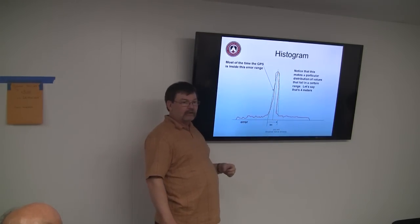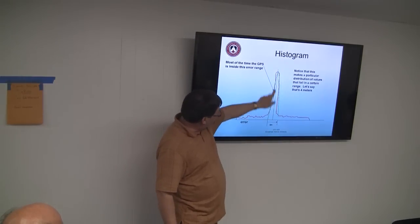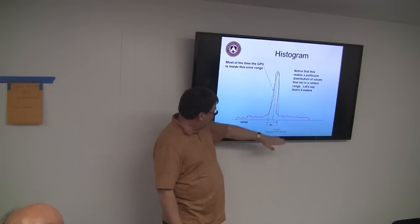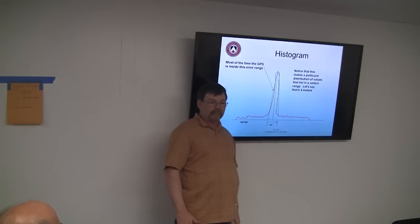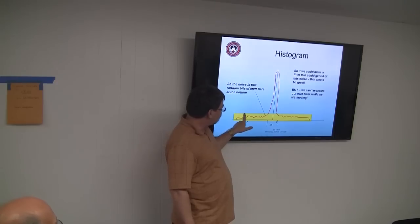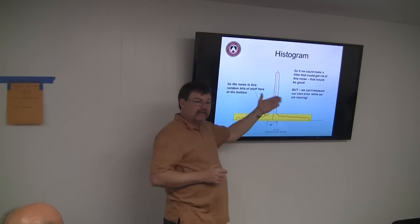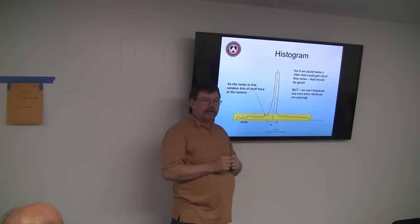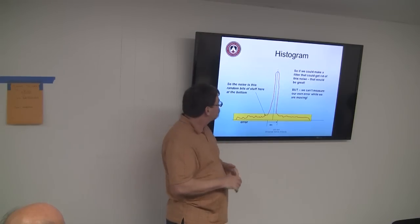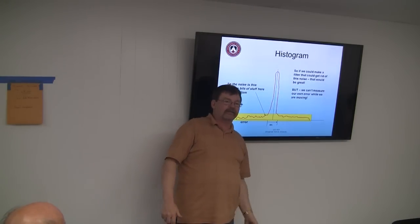Most of the time, GPS error fits this normal distribution curve — let's say centered around four meters. What we'd really like to do is identify and throw away the bad readings. We could filter based on where each reading falls on this curve. But we can't do that in a moving vehicle, because we're constantly moving and we don't know where the robot is — that's the whole point of having GPS.